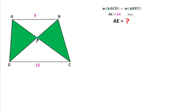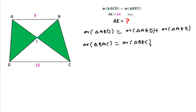Since these two green triangles have equal area, we can write: area of triangle ABD equals area of triangle AED plus area of triangle AEB. Also, area of triangle BAC equals area of triangle BEC plus area of triangle BEA.